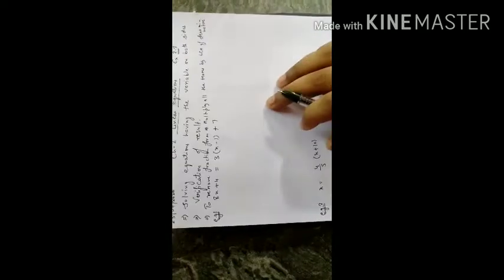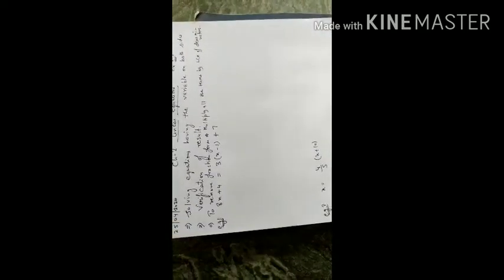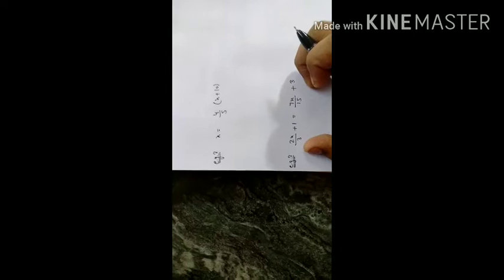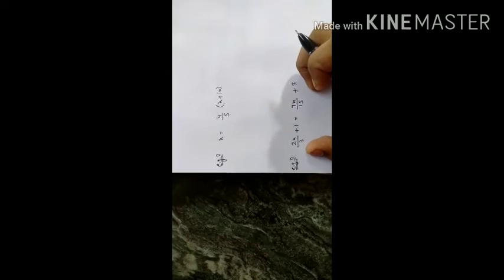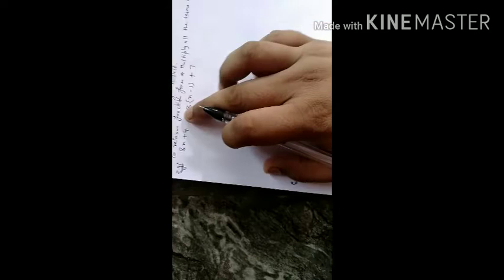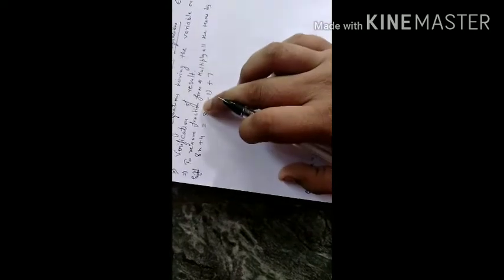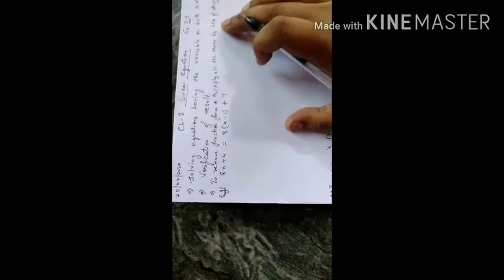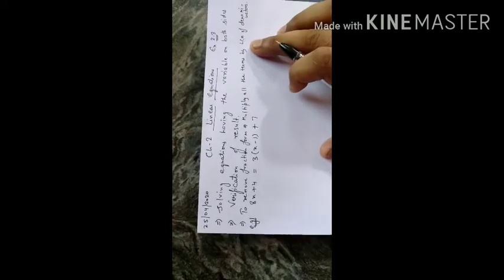One more type of question involves fraction form equations, like 2x upon 3 plus 1 is equal to 7x upon 15 plus 3. To simplify these, we multiply all terms by the LCM of the denominators to remove the fractions.